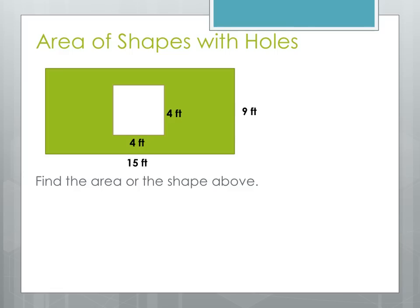Here we're going to find the area of a shape with a hole in it. We want to find the area of the shaded shape shown in this picture. To do that we're going to have to do two things: first, find the area of the entire rectangle, and then take this unshaded portion out. We'll find the area of the inside part and then subtract it from the total area.